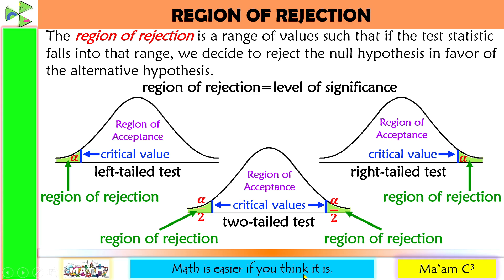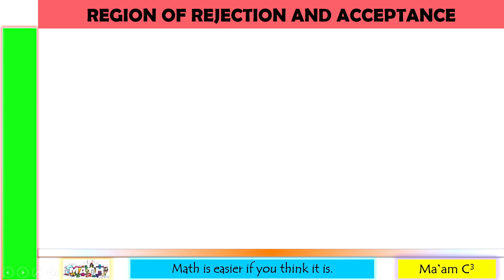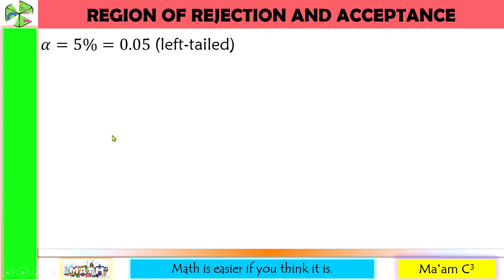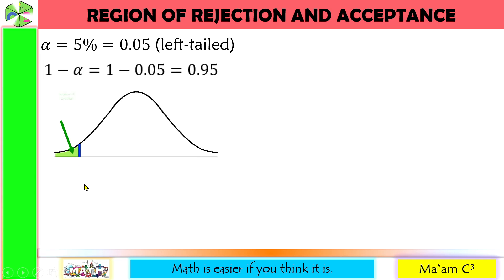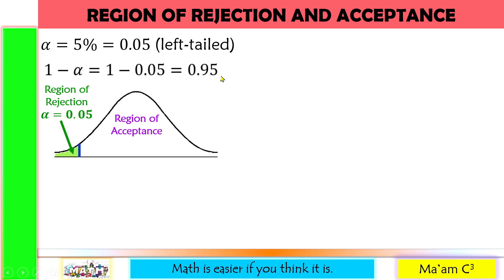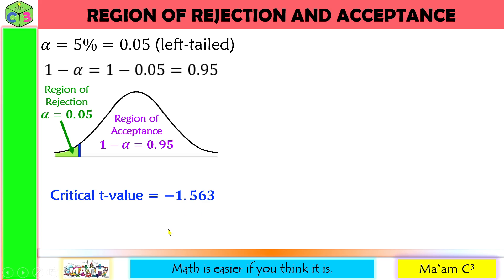Before we proceed, recall that the area of the curve is 1. So if you know the area of the shaded region, subtract it from 1 to get the area of the unshaded region. Let's say we set alpha equal to 5% or 0.05, and it is left-tailed. To solve for 1 minus alpha: 1 minus 0.05 equals 0.95. The region of rejection is equal to 5% or 0.05, and the region of acceptance is 95% or 0.95. For demonstration, we are given the critical t-value equal to negative 1.563.